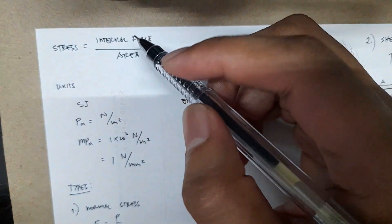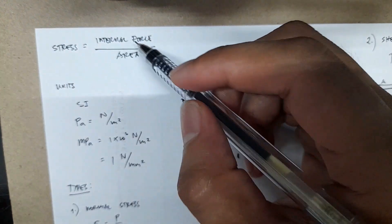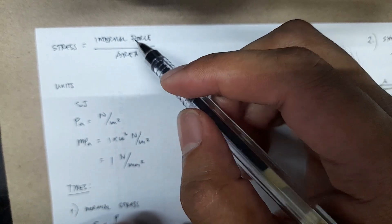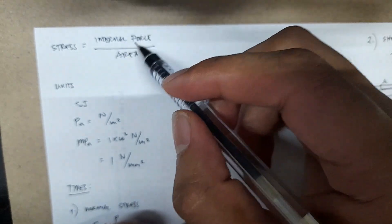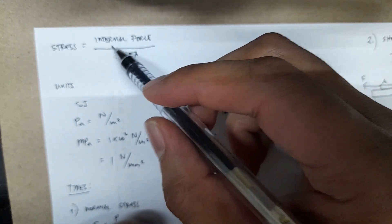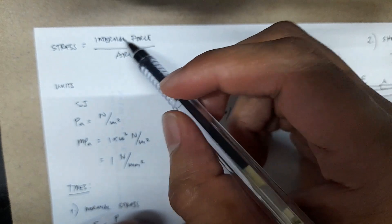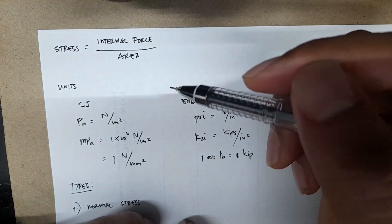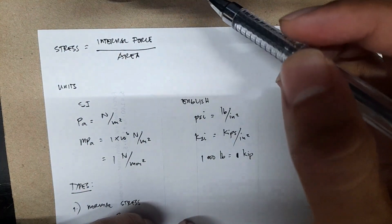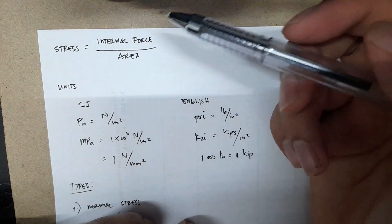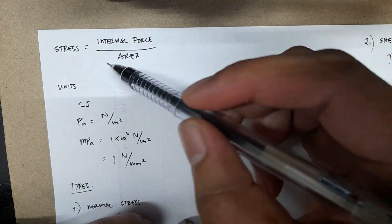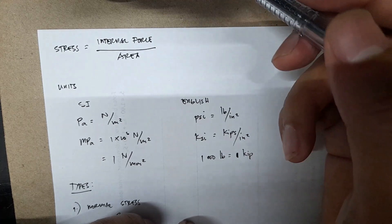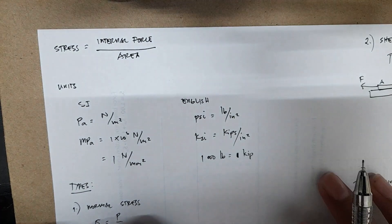Stress describes the intensity of an internal force acting on a specific plane or area which carries your force. Take note that it's an internal force, and this internal force is the reaction or reactive force caused by the application of your external forces. Sometimes stress is also defined as your unit strength, or the strength of your member or material per unit area.